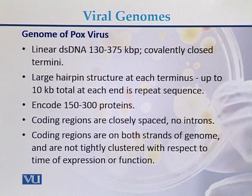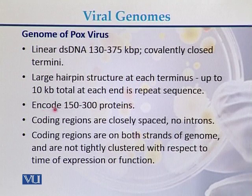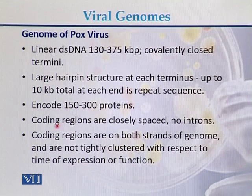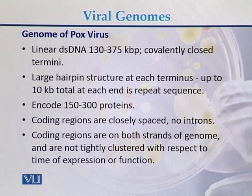The pox virus genome is linear double-stranded DNA, ranging from 130 to 375 kb, with long hairpin structures at each terminus. It encodes 150 to 300 proteins. Coding regions are closely placed with no introns, and the coding regions are present on both strands of the genome.